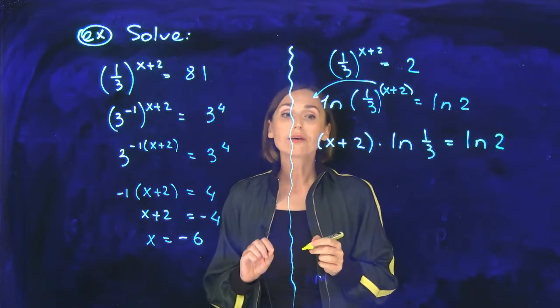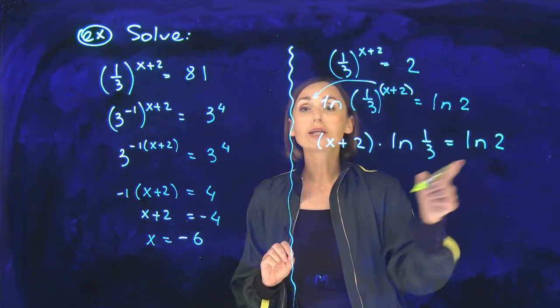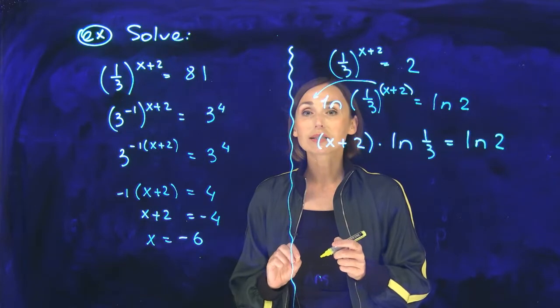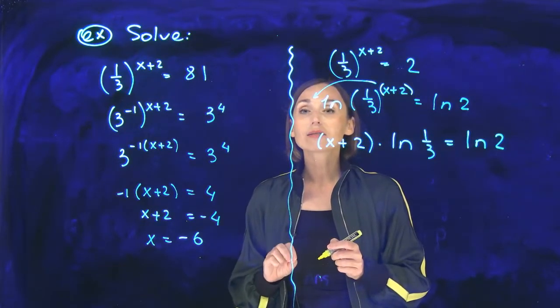I want to emphasize that ln of one-third and ln of 2, they are numbers. Think about them as numbers.